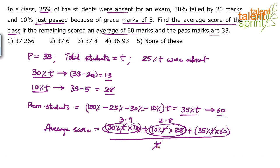Sorry — we should not take T in the denominator; we should take 75% of T. Because total students are T but 25% were absent, so for the average you should take only the remaining 75% of students. So, 30% of these have scored 13, 10% of these have scored 28, and 35% have scored 60. T gets cancelled.